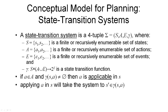The second component is a set of actions. Actions are the things an agent can do to change the state of the world. The third component is a set of events. Events can happen in the world and are not under the control of an agent, but events too can change the state of the world.